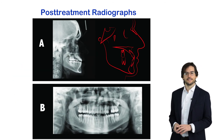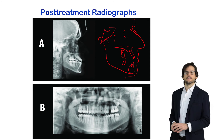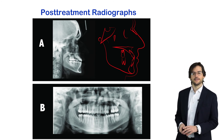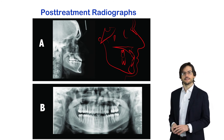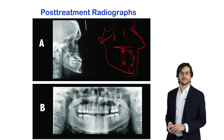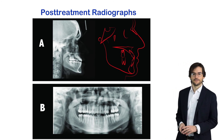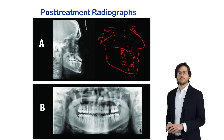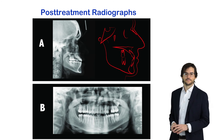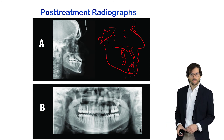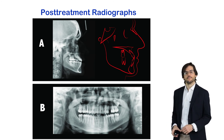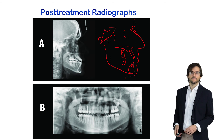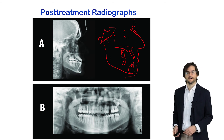Cephalometric analysis identifies significant changes due to the clockwise rotation of the mandible, which was necessary to correct the Class III malocclusion. The panoramic radiograph showed that adequate root parallelism was obtained. Moreover, we can observe the lower molars uprighted due to the distalization of the complete mandibular arch.